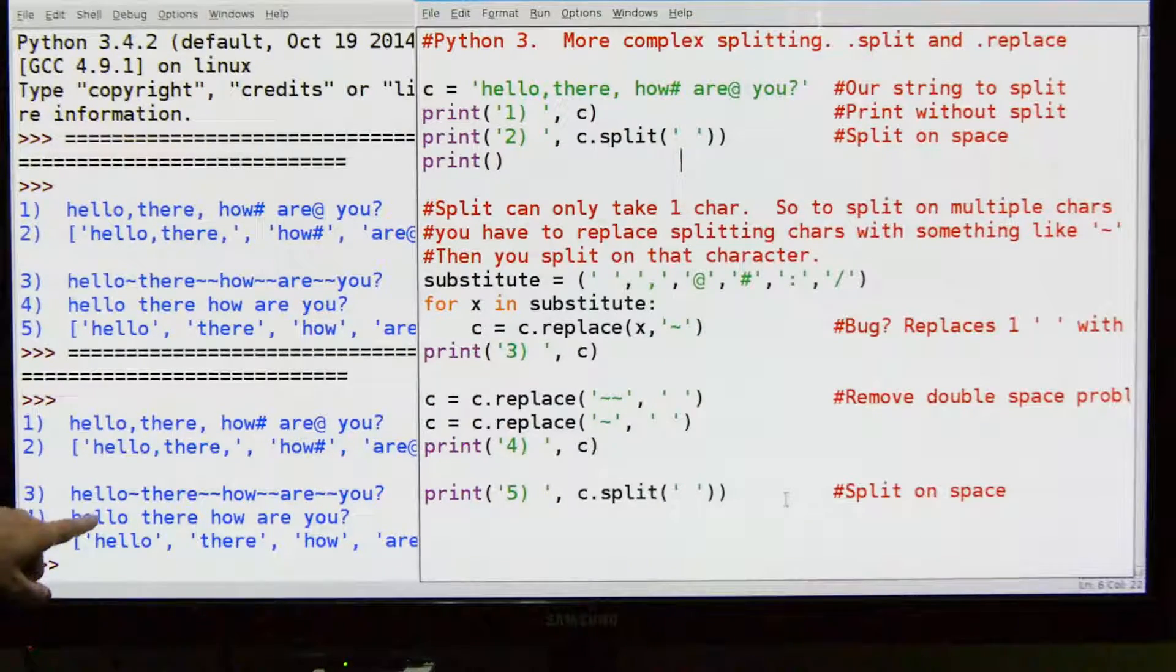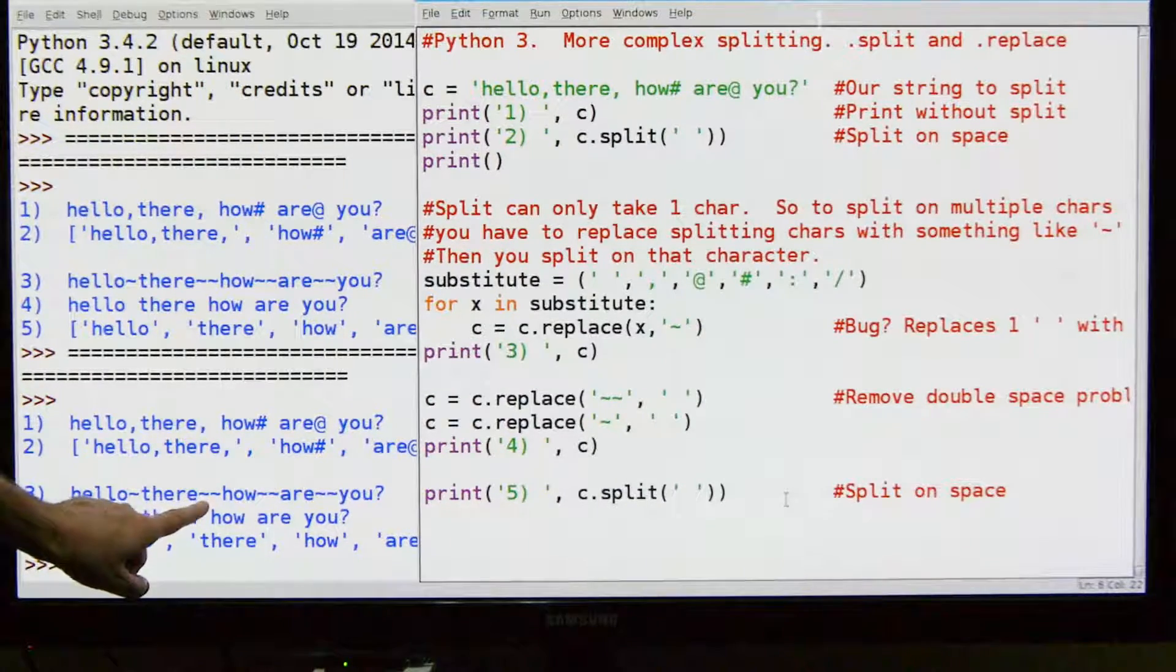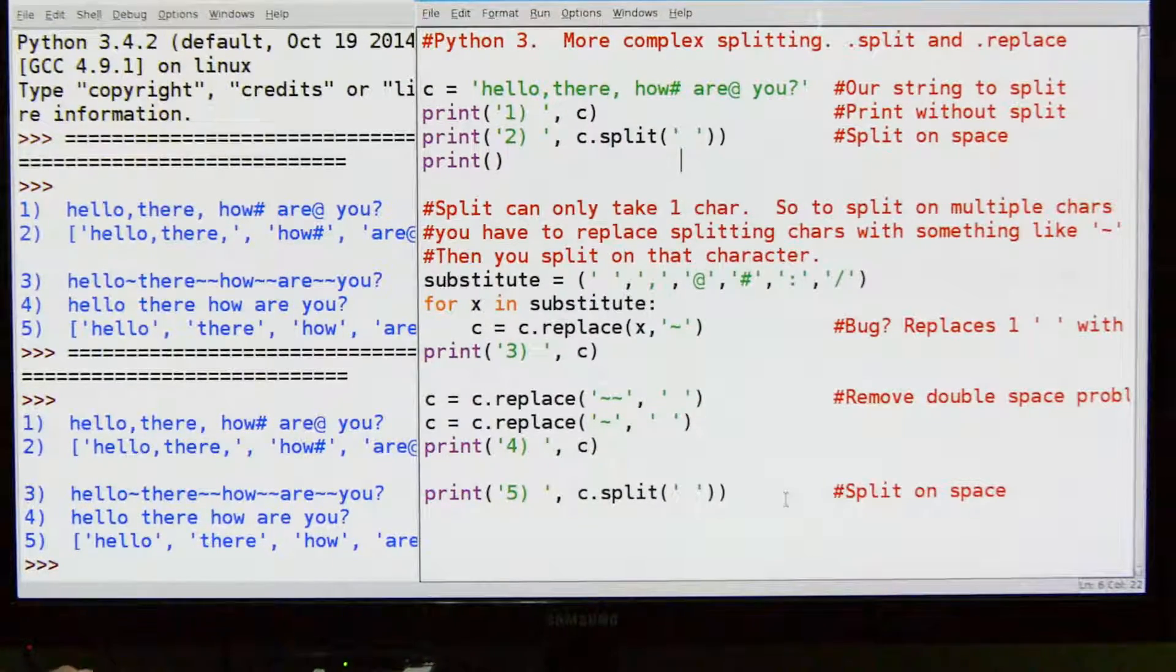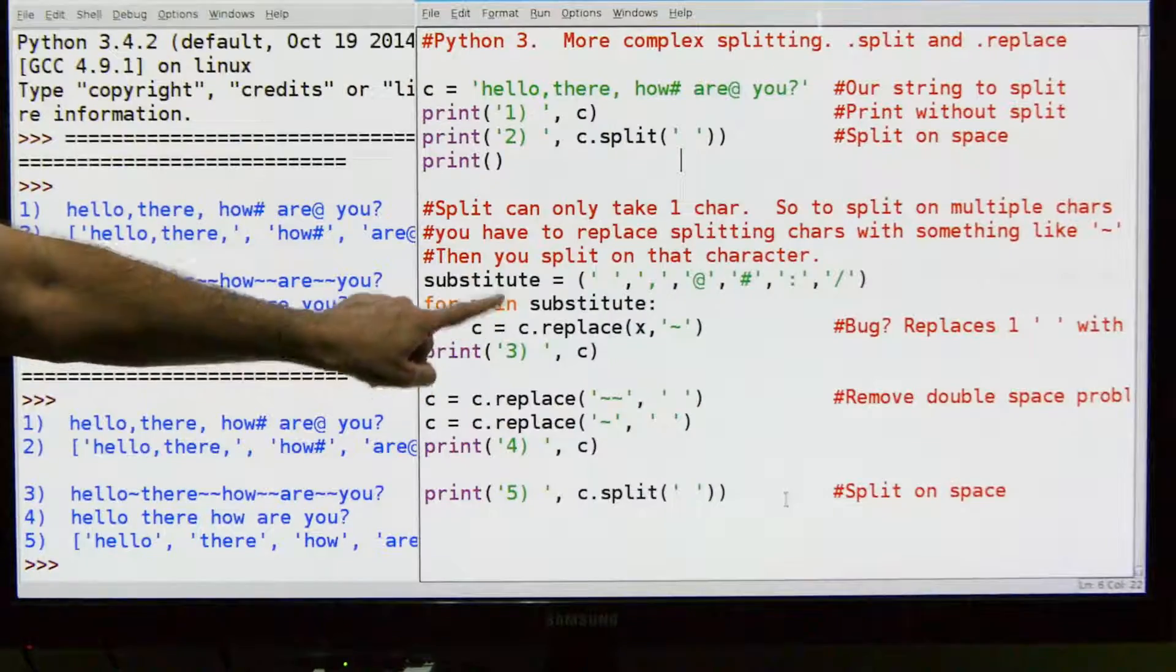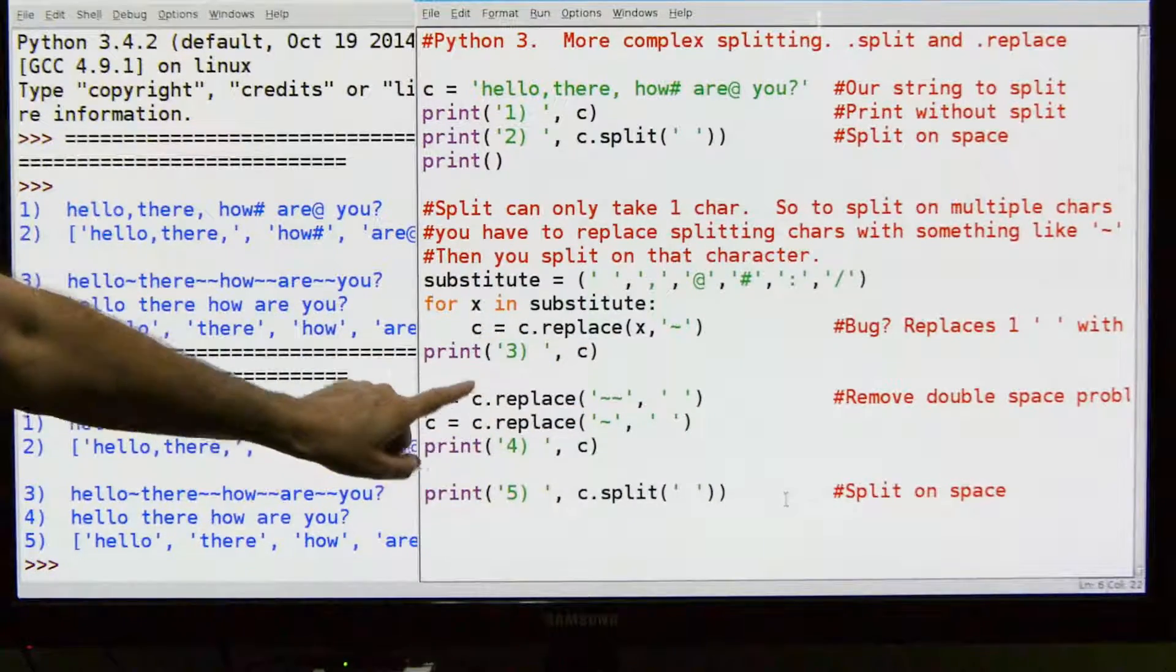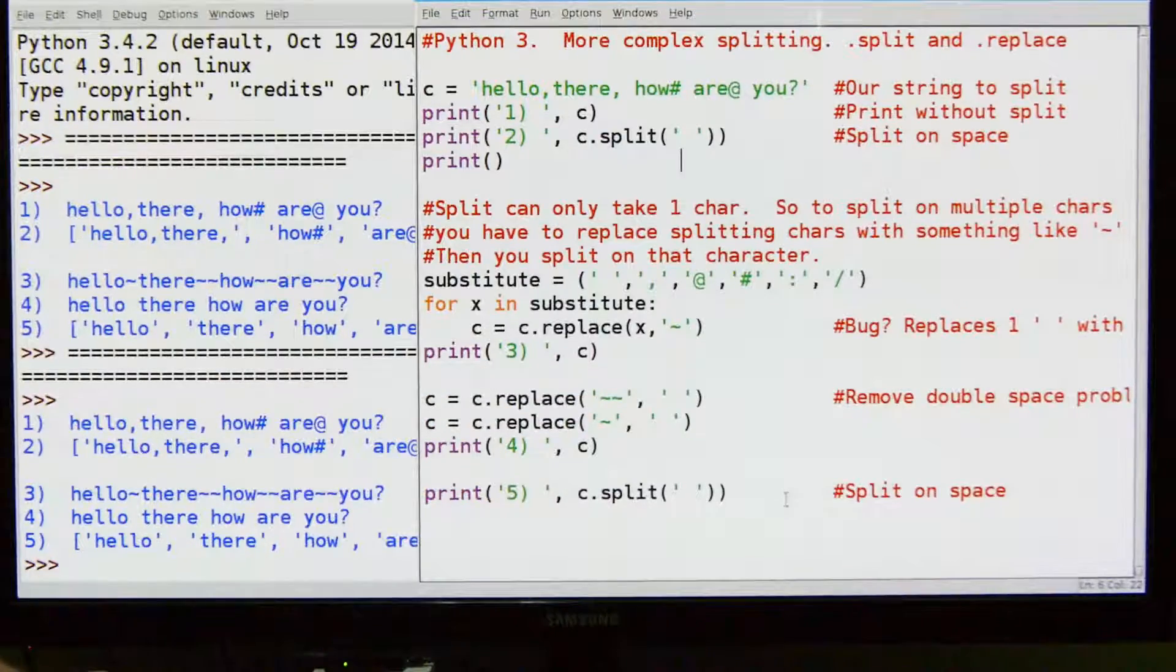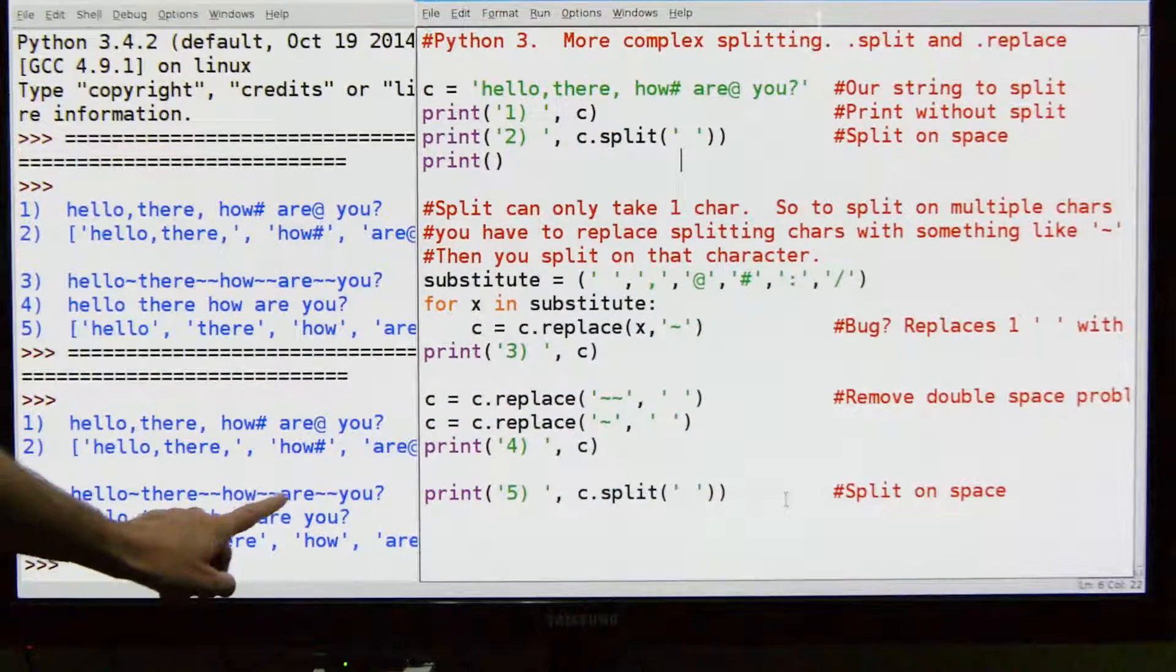You can see over here where it says hello there, tilde tilde how, tilde tilde r, tilde tilde u. So yeah that's line three. It printed it right here. So it's going to go through this loop, it's going to do the replacement. We get our new C value and it looks like this.